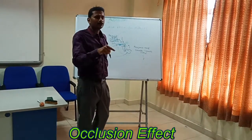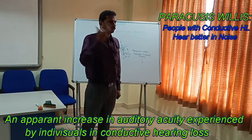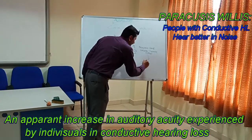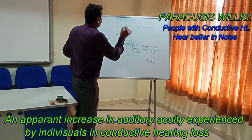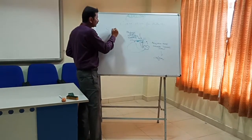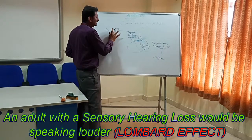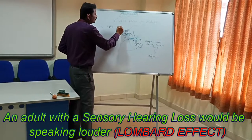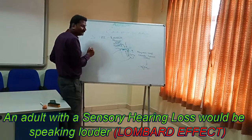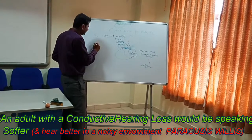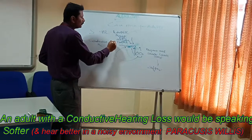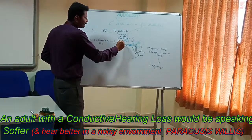So in response to this, what do I do — do I go louder or do I go softer? I go softer. So behaviorally, an adult with a sensorineural hearing loss will go louder, and an adult with a conductive hearing loss would go softer.